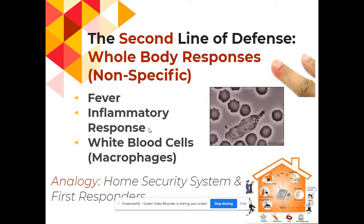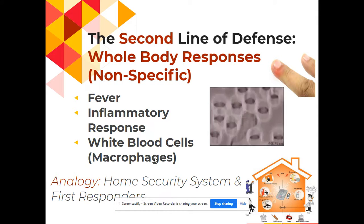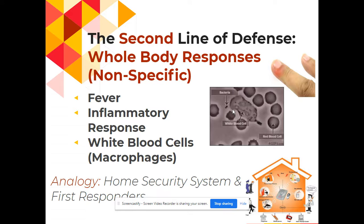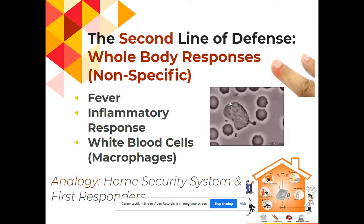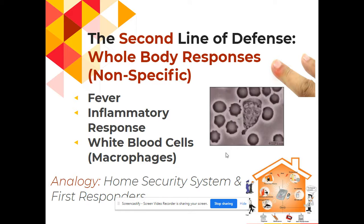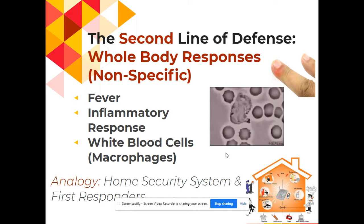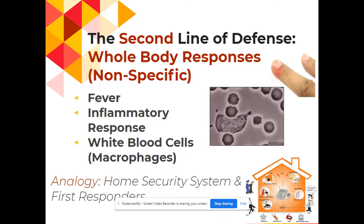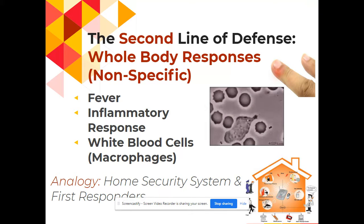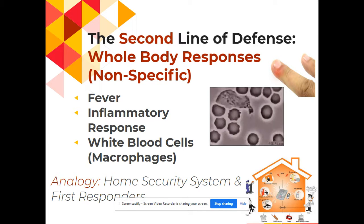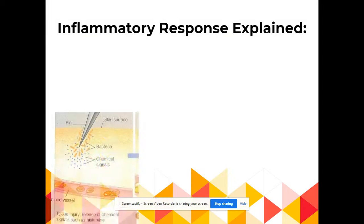We've covered fever, the inflammatory response, and macrophages. In this picture, a white blood cell is chasing after a bacterium — that little black dot — and basically engulfs it to prevent it from causing harm. In the castle analogy, this is like a home security system recognizing something has broken through the barrier, releasing histamine, and calling first responders — those macrophages — to get rid of the potential intruders.